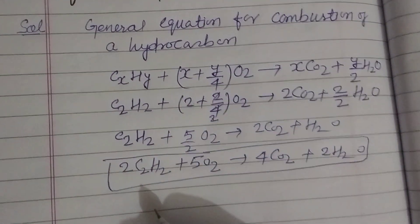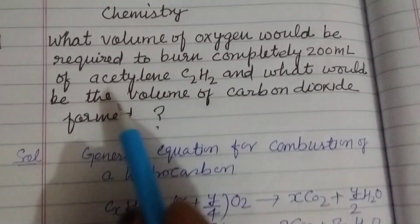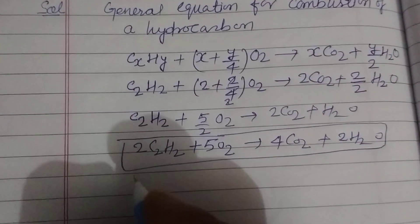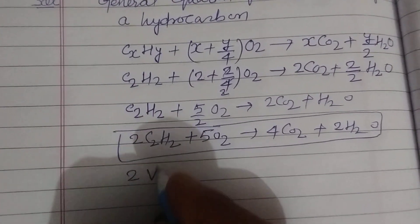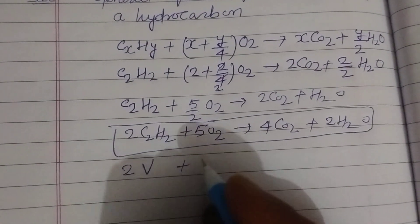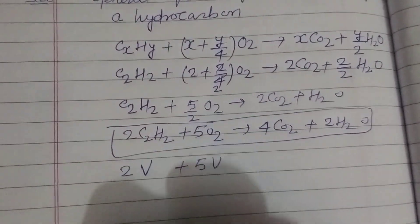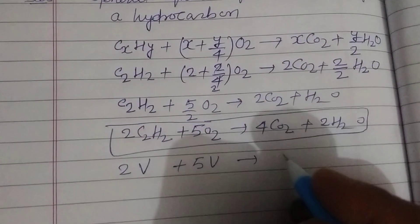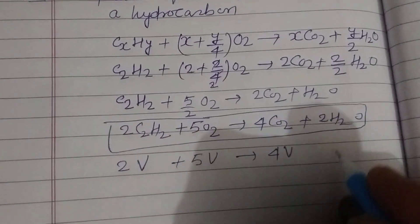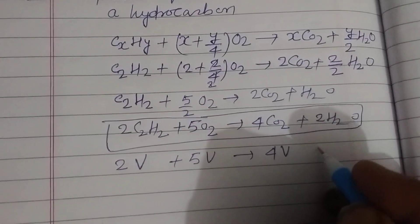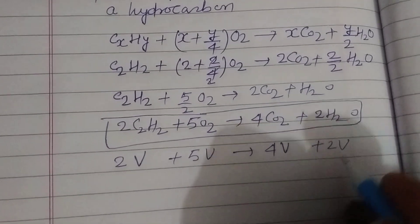From here, it is given 200 mL of acetylene. Here, 2 volumes of acetylene require 5 volumes of oxygen to burn to give 4 volumes of carbon dioxide and 2 volumes of water.